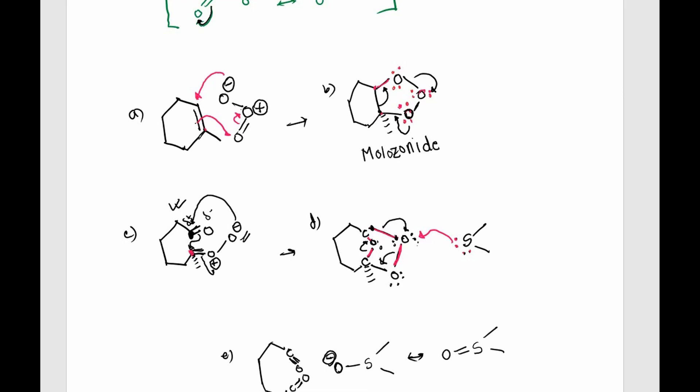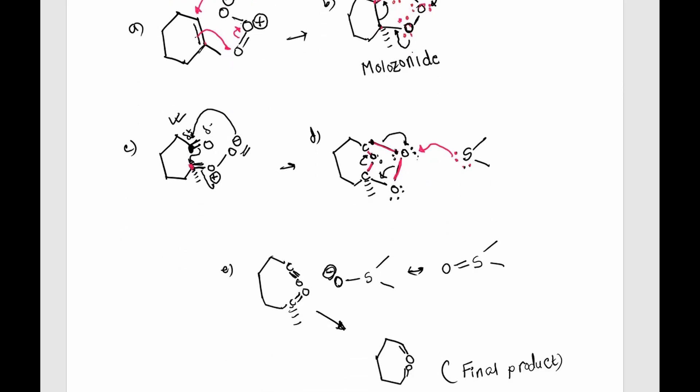Later on, this negative charge can form a double bond between this oxygen and sulfur atom, which is called dimethyl sulfoxide, and we'll be left with our final product from the ozonolysis reaction. I hope you guys have understood.